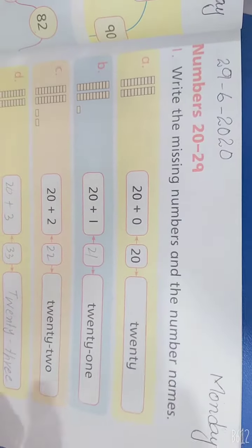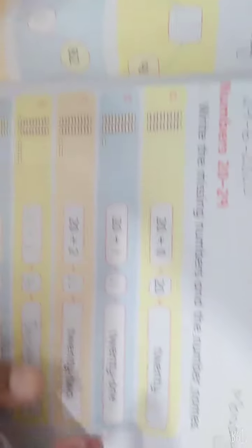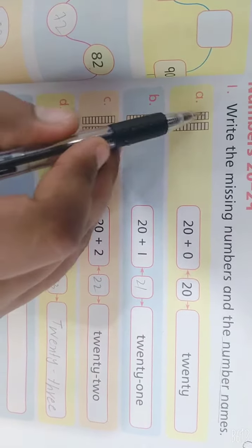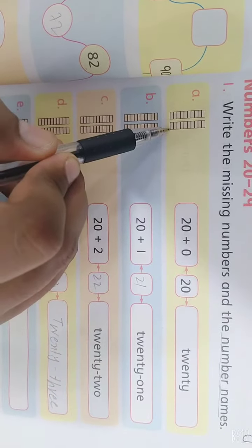आपने missing number लिखने हैं और number name भी लिखने हैं दोनों चीज़े लिखने हैं। First, look at this. Better, A part को देखें। A part में आपके पास यह जो stack है, इस stack में one जो है वो 10s का है।